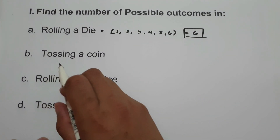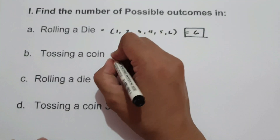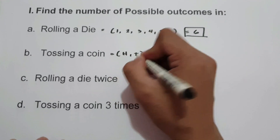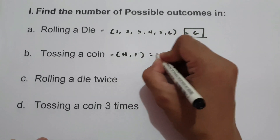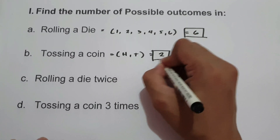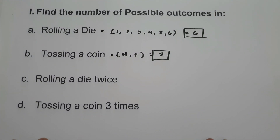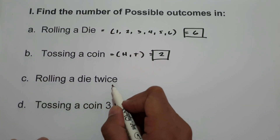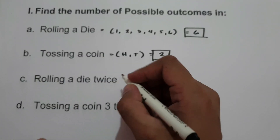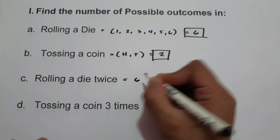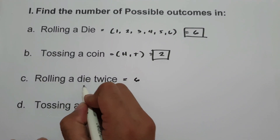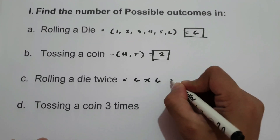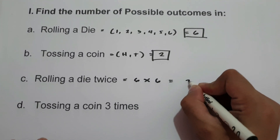On letter B, tossing a coin — that will be head and tail, so the answer is 2 outcomes. On letter C, rolling a die twice. Whenever we roll a die that is 6, and since we are rolling a die twice, that is 6 multiplied by 6, which is 36.